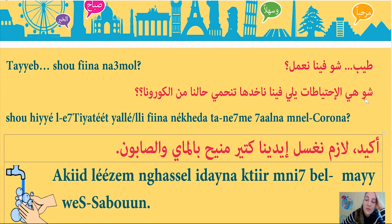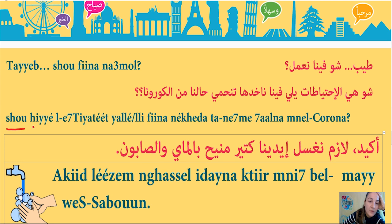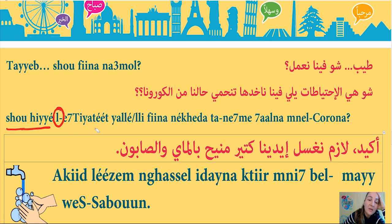Another question I used is: شو هي الاحتياطات اللي فينا نخدها تنحمي حالنا من الكورونا؟ Let me break this down. شو هي means 'what are.' الاحتياطات means 'the precautions' — احتياط is the singular 'precaution,' احتياطات is the plural. In Lebanese Arabic I say احتياطات; in standard Arabic they say احتياطات. So شو هي الاحتياطات means 'what are the precautions?'